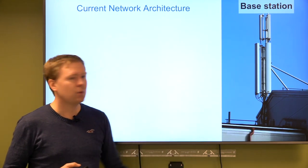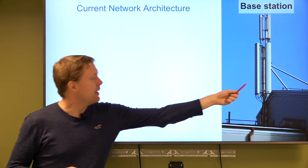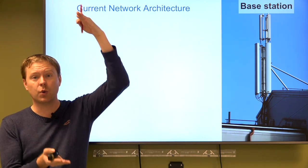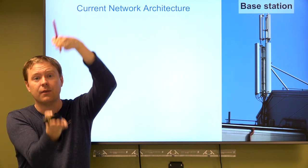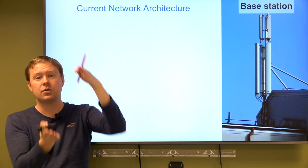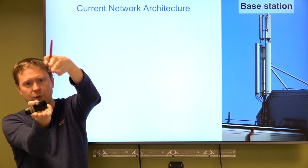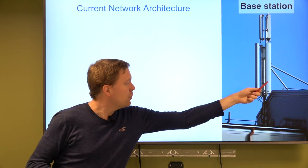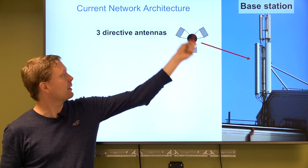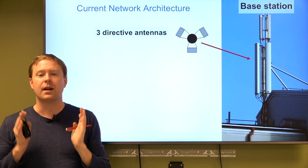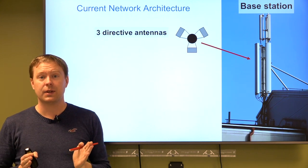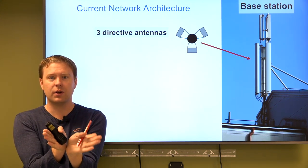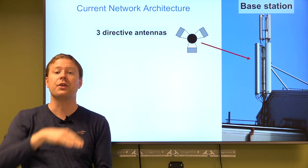The base station contains big antennas with high directivity — they are tall because the signal is directive in the vertical domain, with most of the signal energy concentrated within some tens of degrees. Looking from above, there are three directive antennas arranged to face different directions — one, two, and a third on the backside.